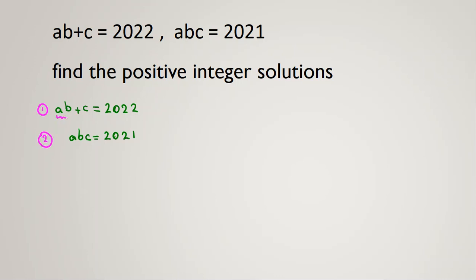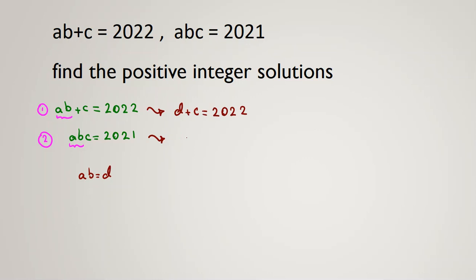We can see that A·B appears in both equations. So we can consider A·B as one variable — call it D. Then we have only D and C, and it's easier to work with two variables than three. So I rewrite: first equation, D plus C equals 2022; second equation, D·C equals 2021.